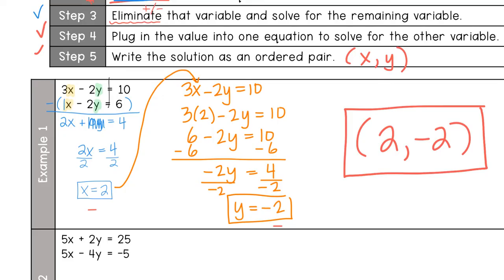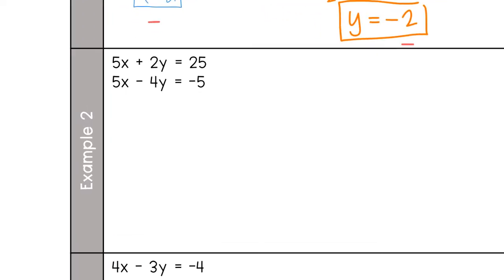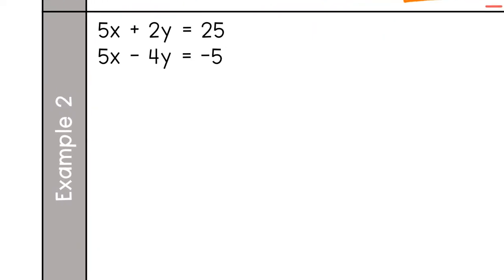Now let's do example number two: 5x plus 2y equals 25, and 5x minus 4y equals negative 5. Again, they're already lined up — x's with x's, y's with y's. For step two, notice that the x's both have a 5 in front of them. That's exactly what you want — one variable with the same coefficient. So we're going to cancel out the x by subtracting the second equation from the first.